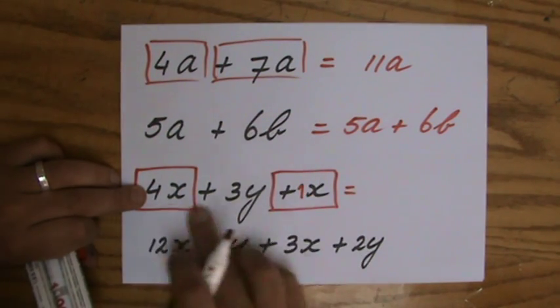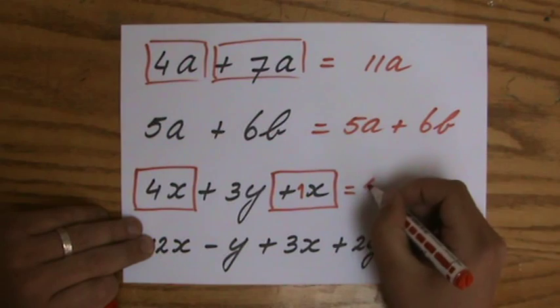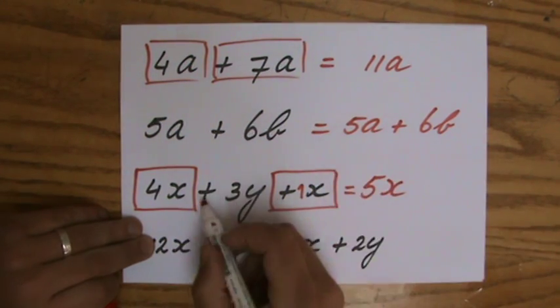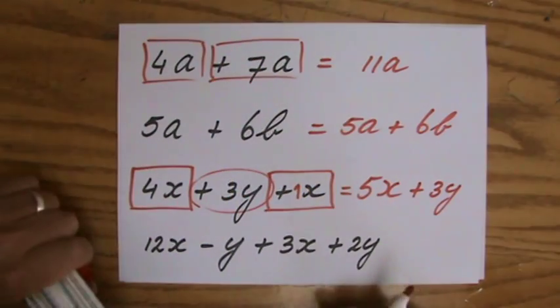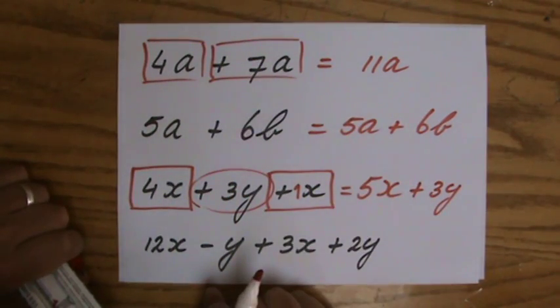4X boxes, if you like, plus 1X box, those are 5X boxes, 5X. And then I have plus 3Y. Look at that, I simplified the expression over there. I made it shorter.